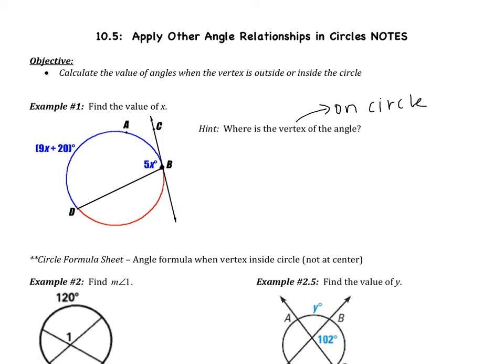When the vertex is on the circle, what's the relationship between the angle and the arc? Vertex on the circle — the angle is one half of the arc. In this case, our angle is 5x, that's angle CBD. So I'm going to have 5x equals one half, and then the arc that it intercepts is DAB, the 9x plus 20.